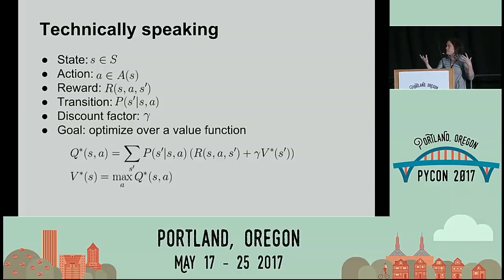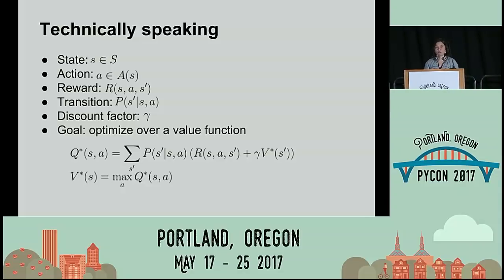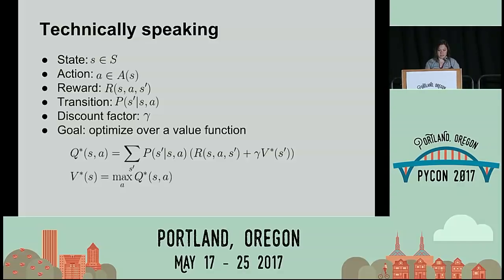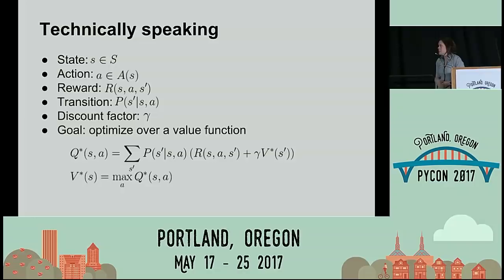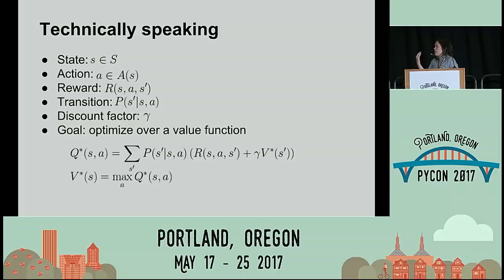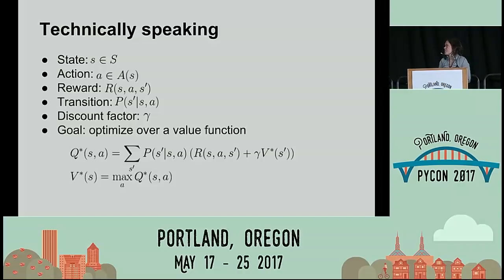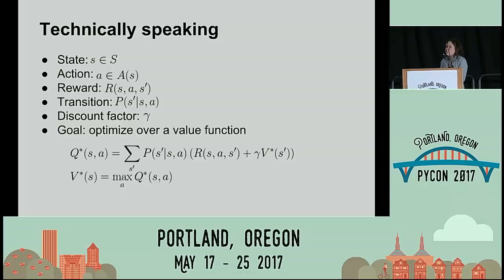Going back to the technical notation: we have states, actions, rewards — these rewards are associated with the state-action transition into the new state. This transition has a probability distribution, and using some discount factor, we want to optimize over the value function. There are two kinds of value functions: Q and V. Our Q function is our value of taking action A when we're in state S. Our V function is what our ultimate payout is out of being in this state, following the optimal policy.